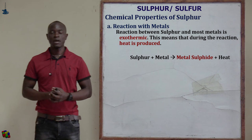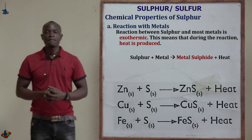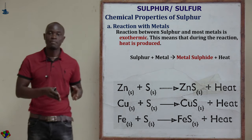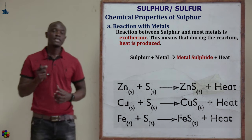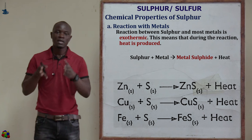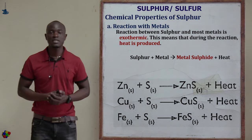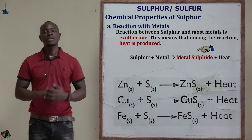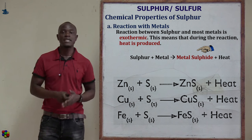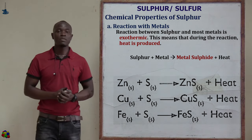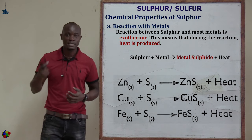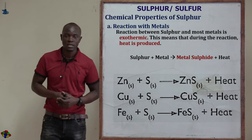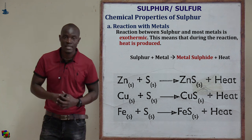The chemical properties of sulfur begin with reaction with metals. When sulfur reacts with metals, it forms metal sulfide and heat is liberated — an exothermic reaction. For example: zinc plus sulfur gives zinc sulfide (zinc blende); copper plus sulfur gives copper sulfide; iron plus sulfur gives iron(II) sulfide — all releasing heat.